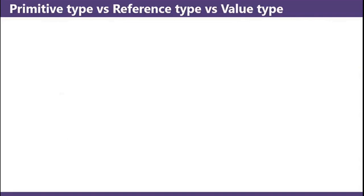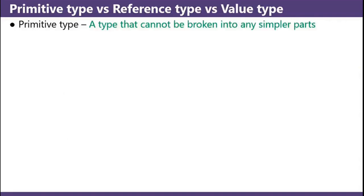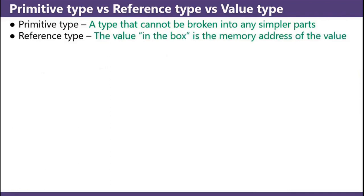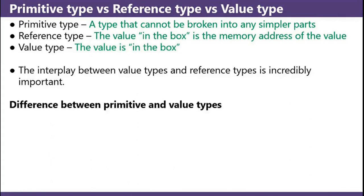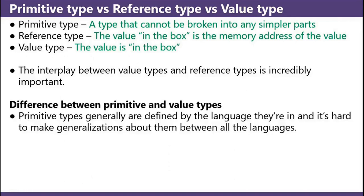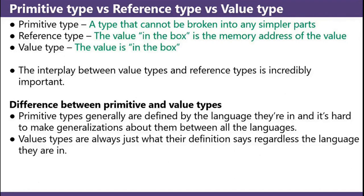Primitive type versus reference type versus value type. A primitive type is a type that can't be broken into any simpler parts. A reference type is where the value in the box is the memory address to the value. A value type is where the value is in the box. The interplay between value types and reference types is incredibly important. Primitive types are generally defined by the language they're in, and it's hard to make generalizations about them between all languages. Value types are always just what their definition says, regardless of the language they're in.